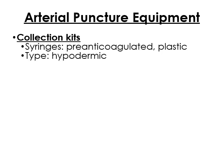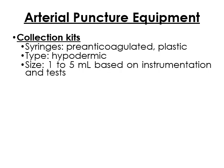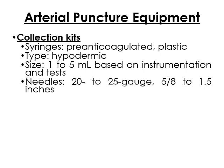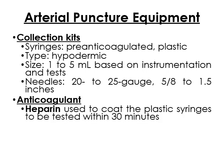So what are the equipment? We have the syringe — it is pre-anticoagulated, plastic, hypodermic type, with sizes of 1, 2, or 5 mL based on instrumentation and test. The needle is 20 to 25 gauge, in lengths of 5/8, 2, or 1.5 inches. The anticoagulant for ABG is heparin. Prior to collection, the syringe must be coated with heparin, most likely 30 minutes before the collection.